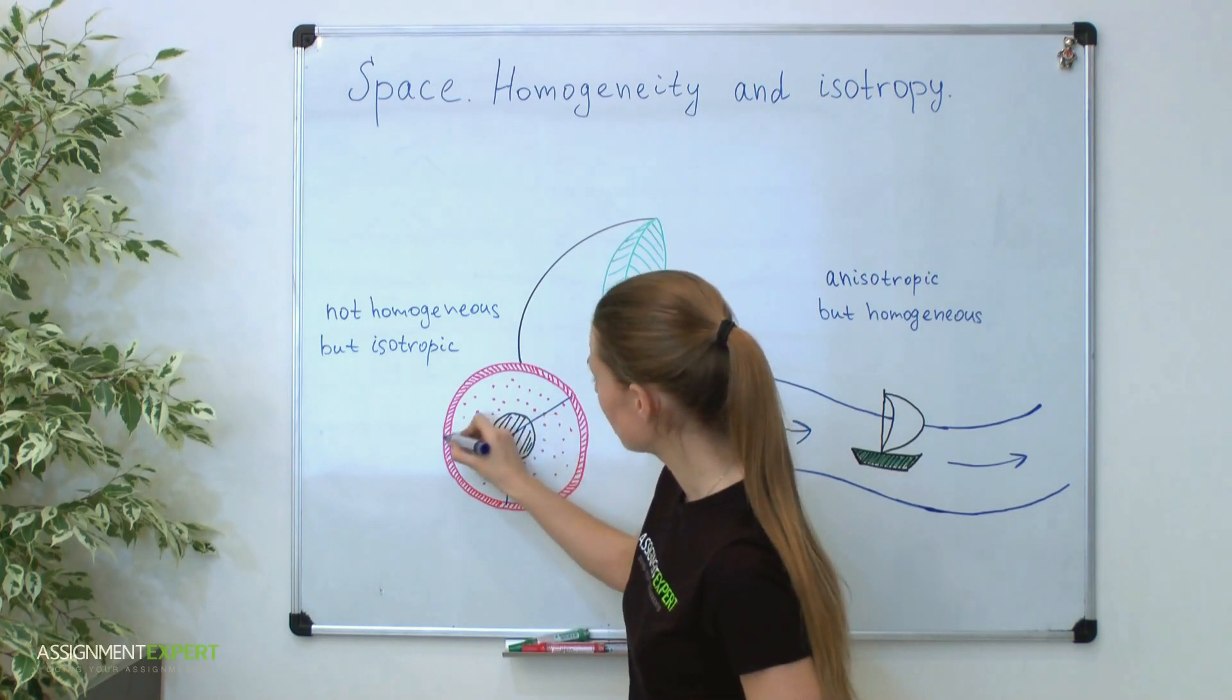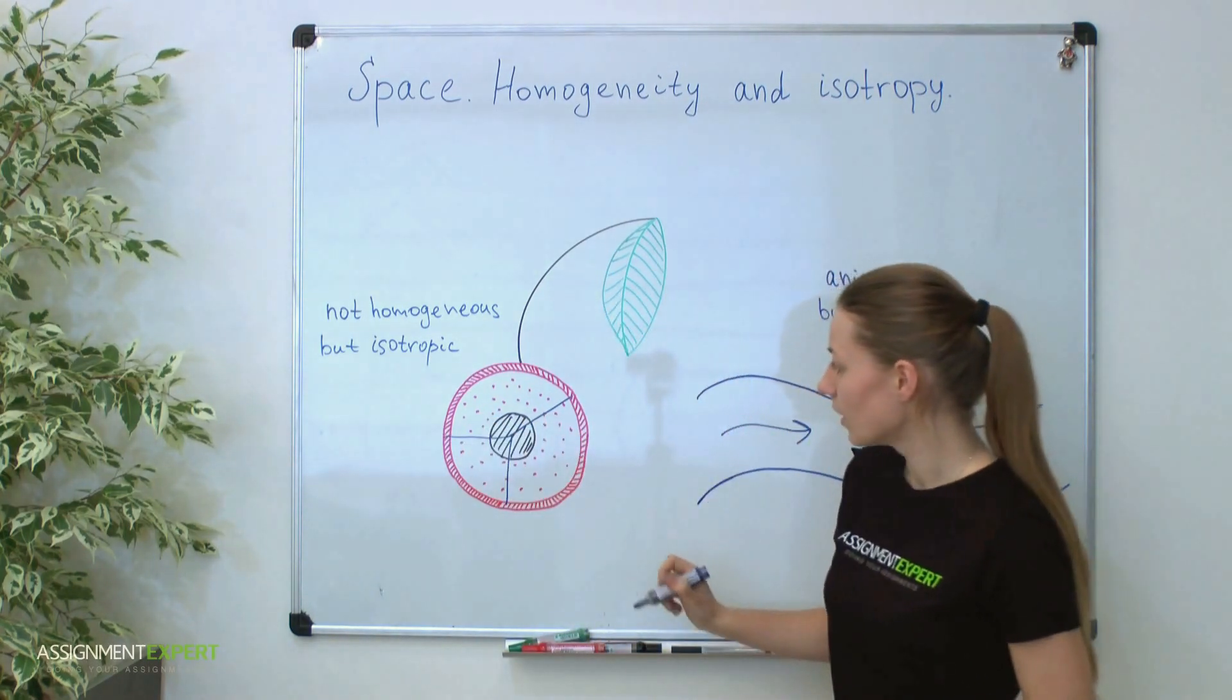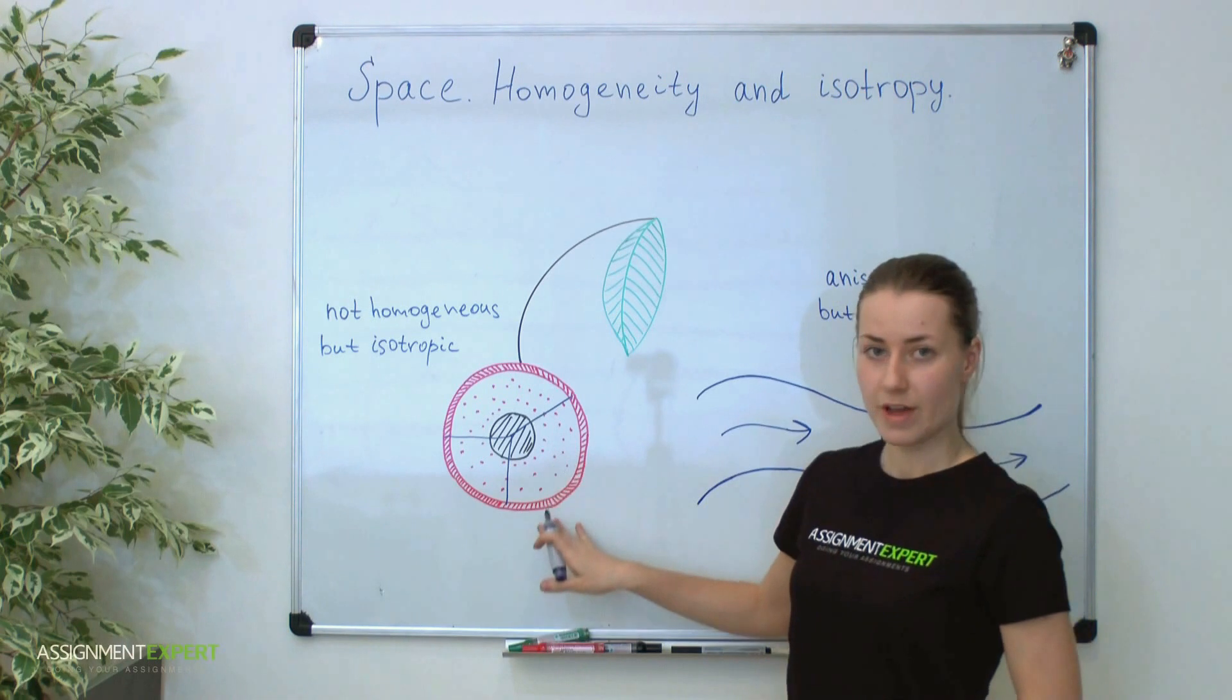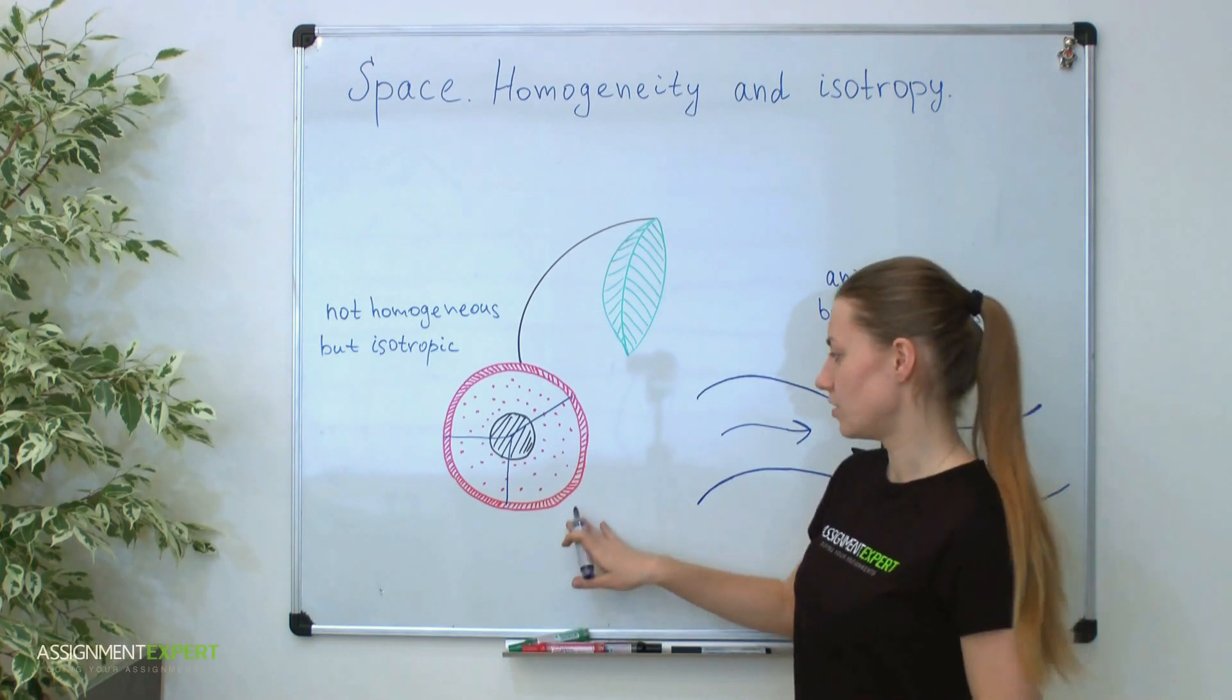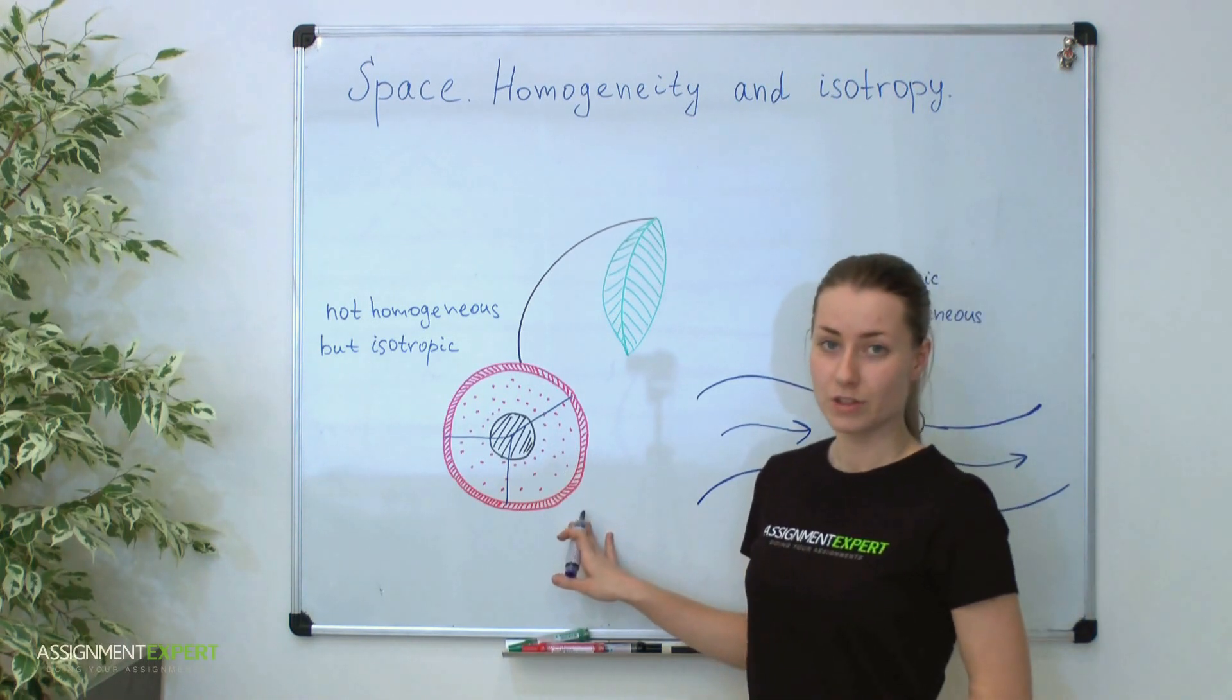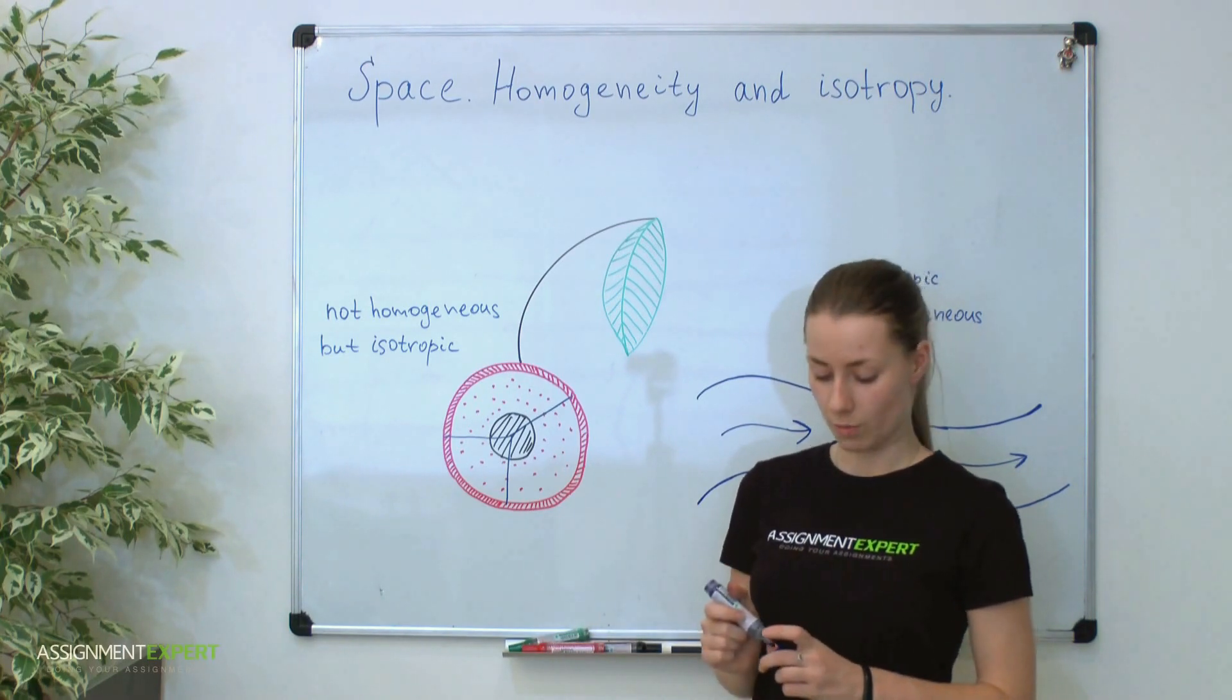It means that the cherry has universality in all its directions. Therefore, the ideal spherical cherry is the isotropic object.